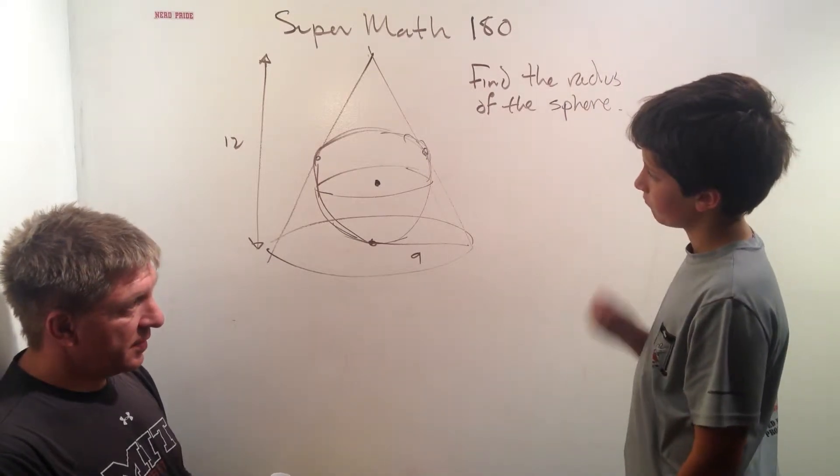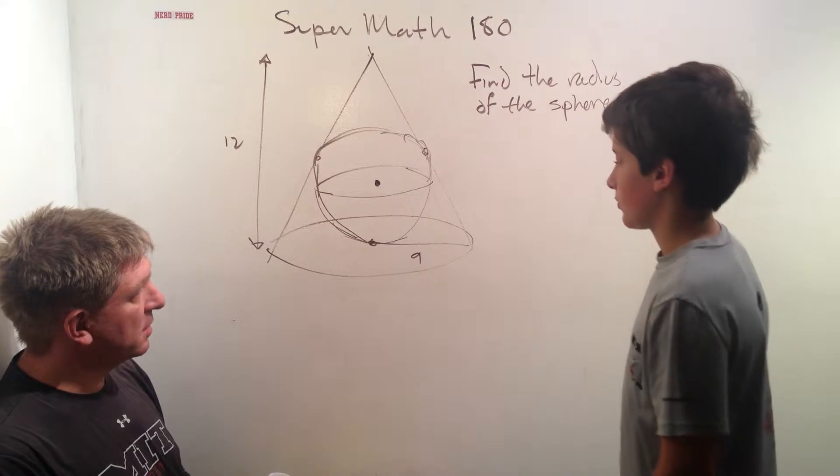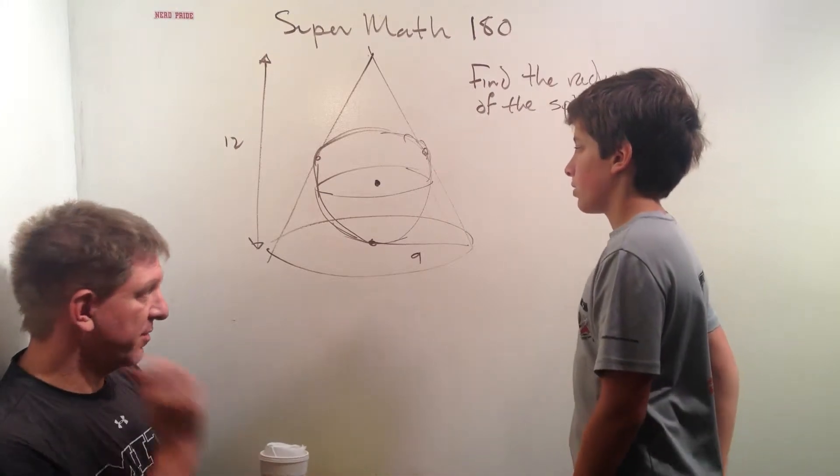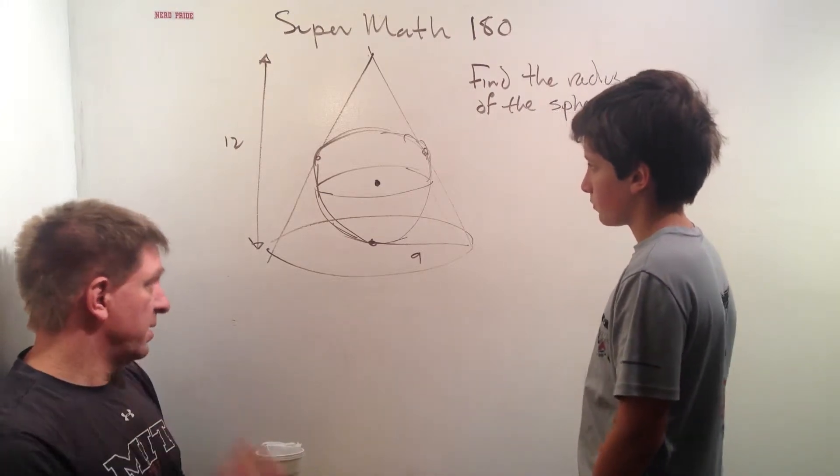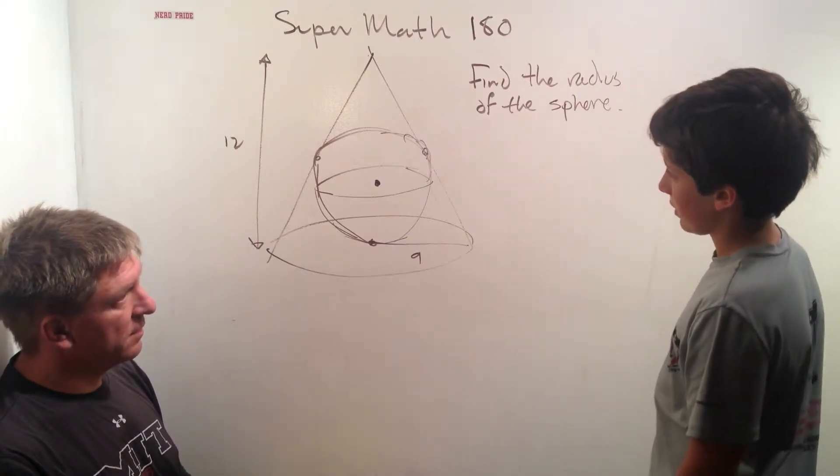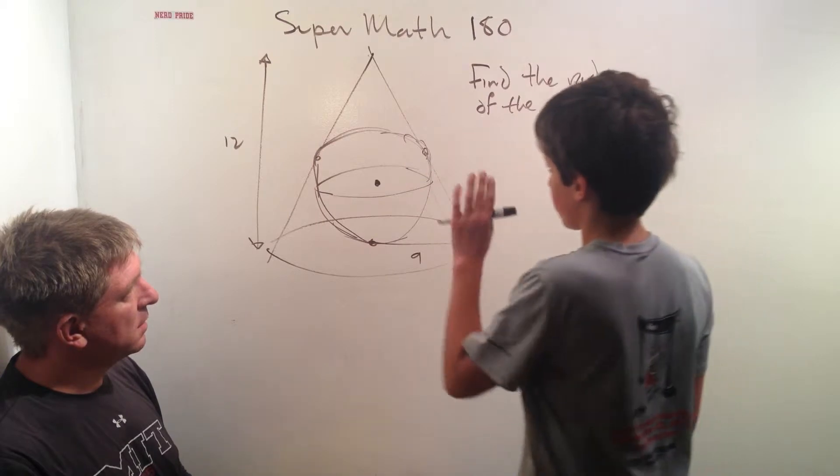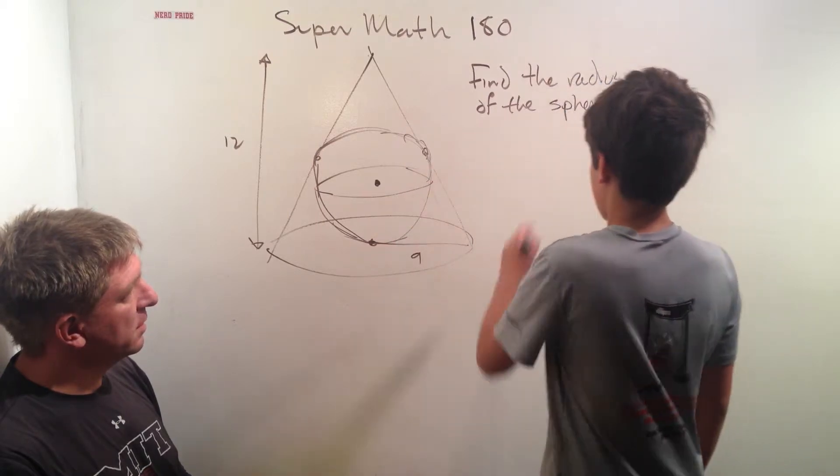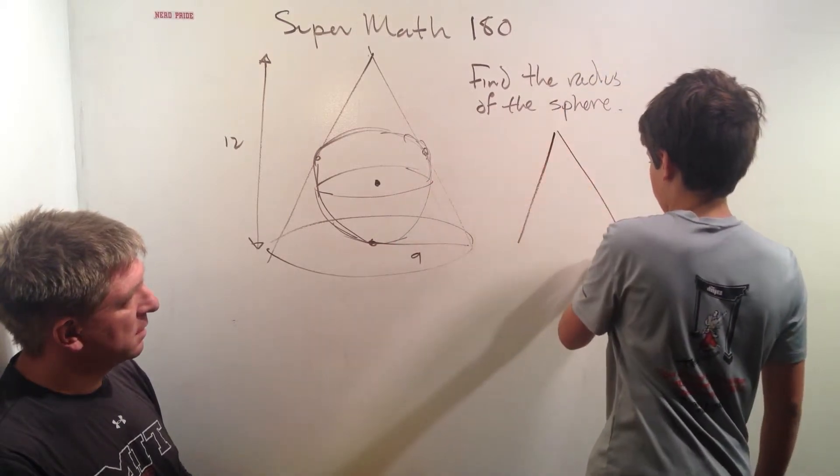Yeah. It's tough with these inscribed three-dimensional objects. You've got to find the right way to look at the picture. Well, I see an idea. Okay. So, what if we look at it straight on? Alright.